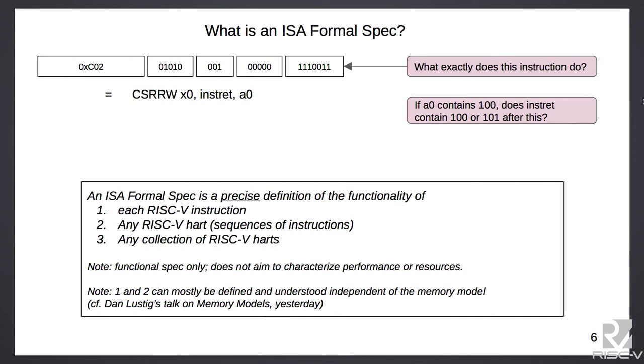To summarize what a formal spec is: it's a precise specification of each instruction — what it does — and then compositions of instructions, which are programs. Initially you can think of that just for single-threaded programs, but it also needs to handle multi-threading. For the first two levels — just instructions and single-threaded programs — the spec can be quite simple. But once you go into multi-threading and start interacting with weak memory models, it gets more complicated.